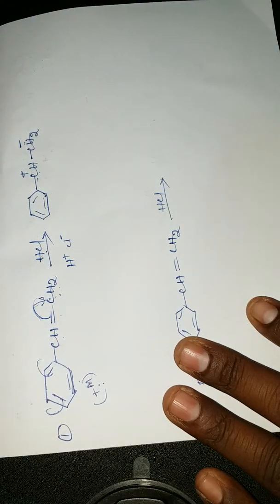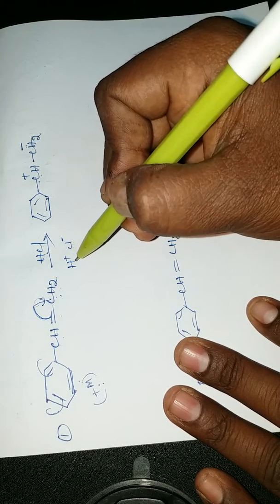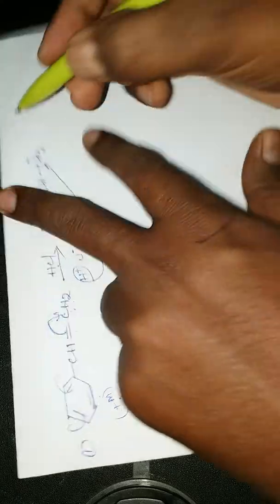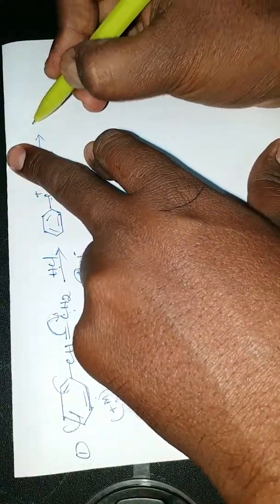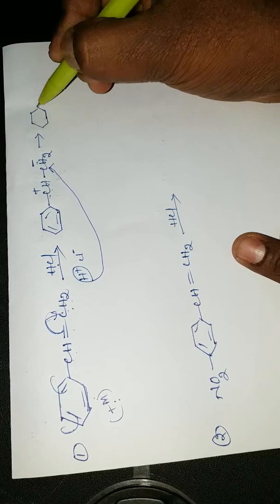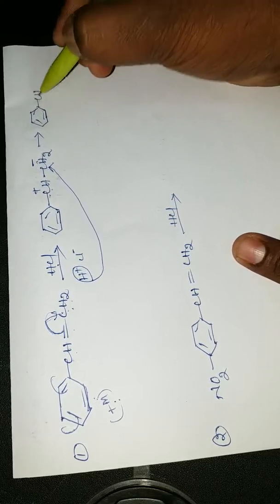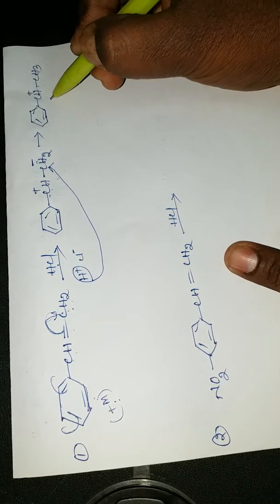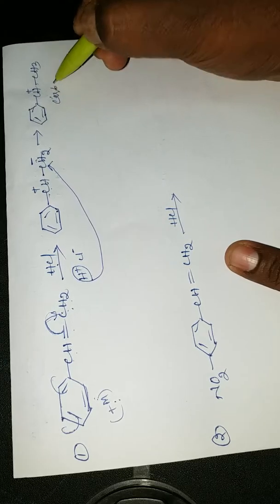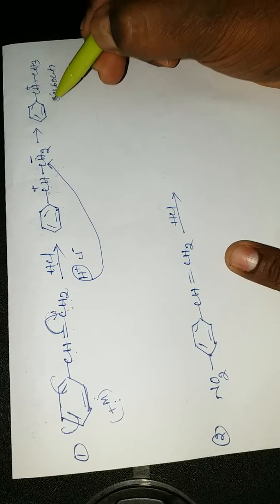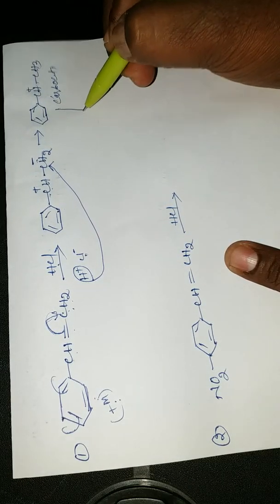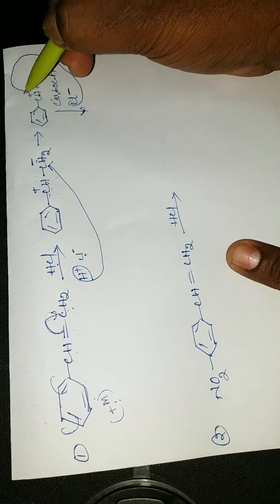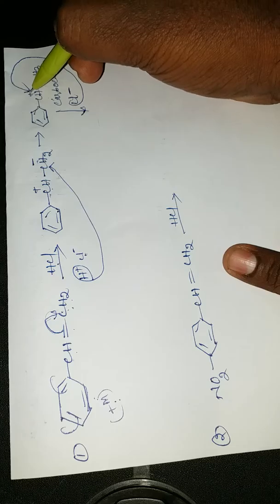The CH₂ is converted into CH⁻ and CH⁺. In HCl, the initial electrophile is H⁺ and the nucleophile is Cl⁻. In this equation, the electrophile H⁺ attacks first — it attacks the negative position CH₂⁻. So we get the intermediate: benzene-CH⁺-CH₃. This is a stable carbocation intermediate.